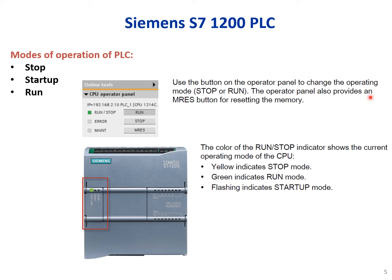You can reset the memory by opening the operator panel. The color of the run/stop indicator shows the current operating mode of the CPU: yellow indicates stop mode, green indicates run mode, and flashing indicates startup mode. In the TIA Portal simulator, you can also see run, stop, error/maintenance, or memory reset modes — which are equivalent to stop, startup, and run modes.